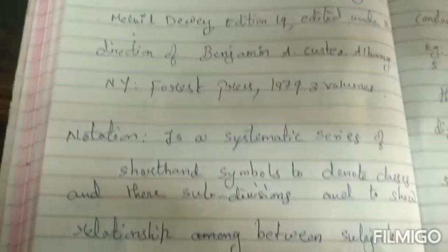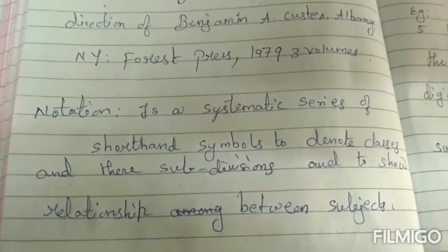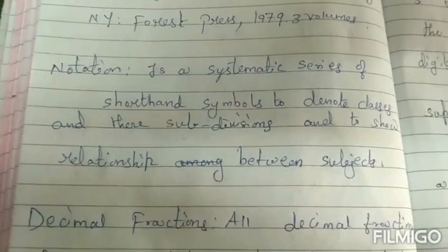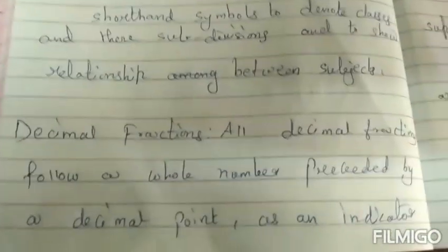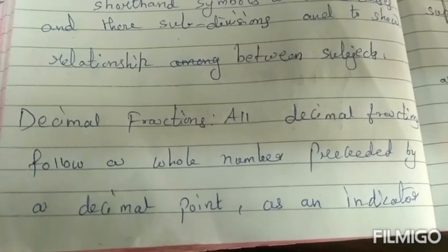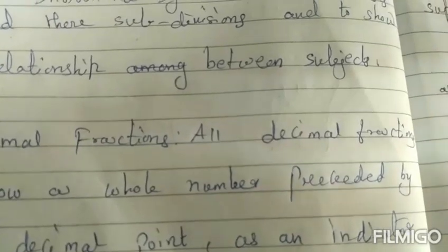It consists of 3 volumes and the notation is a systematic series of shortened symbols to denote classes and their subdivisions and to show the relationship between subjects and the decimal fraction. All decimal fractions follow a whole number preceded by a decimal point as an indicator.